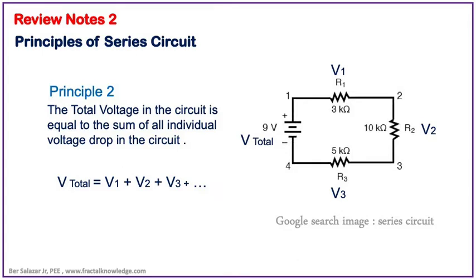The second principle sa series circuit is the voltage of the circuit is equal to the sum of all the voltage drop in each electrical component. We can say that the total voltage V is equal to V1 plus V2 plus V3 and so on.